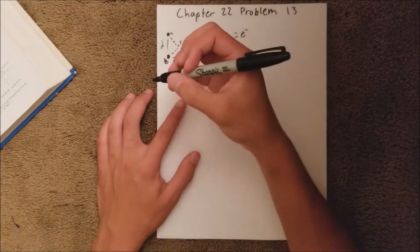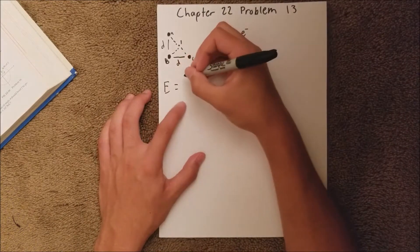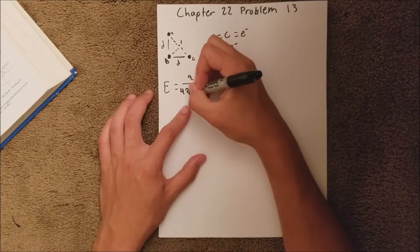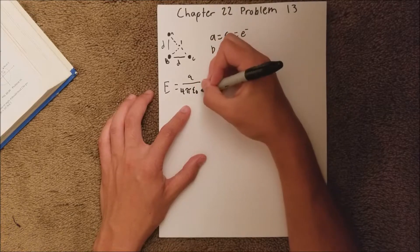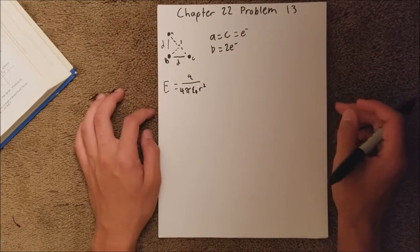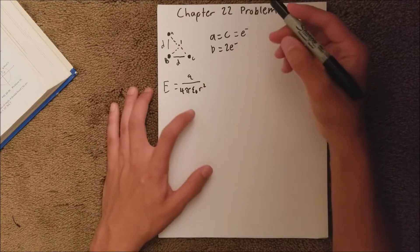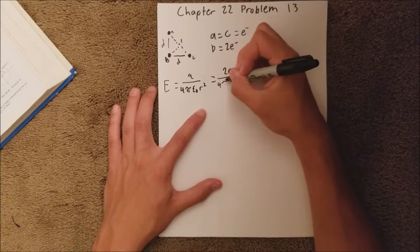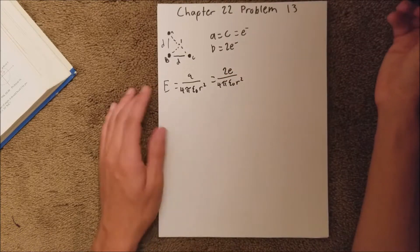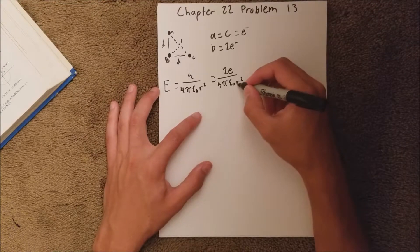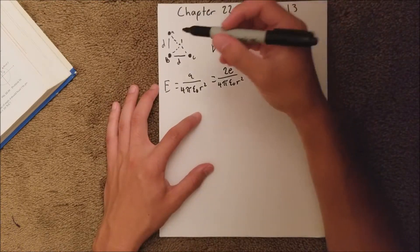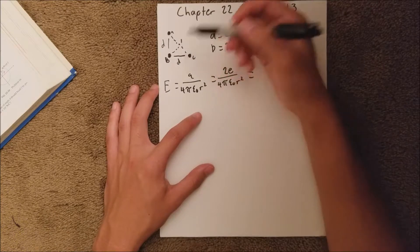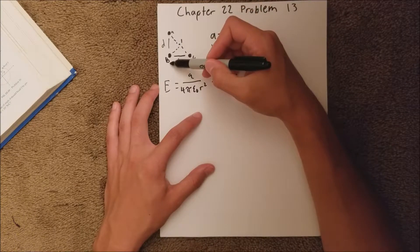So we know that electric field is equal to Q, or charge, over 4 pi epsilon sub 0 R squared. And we know that that charge is two electrons, so we'll say 2E over 4 pi epsilon sub 0 R squared. And we know our radius, and if this is distance D, and this is a 45-90 triangle, we know that the distance between point one and point B, and charge B,